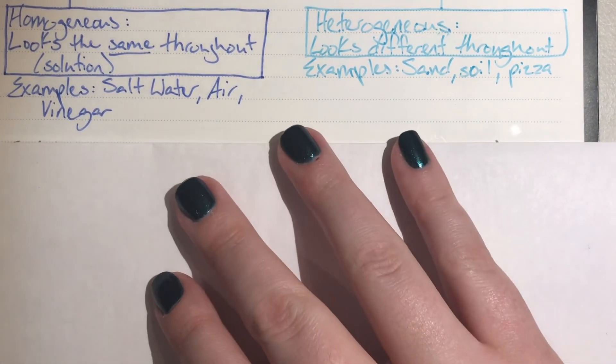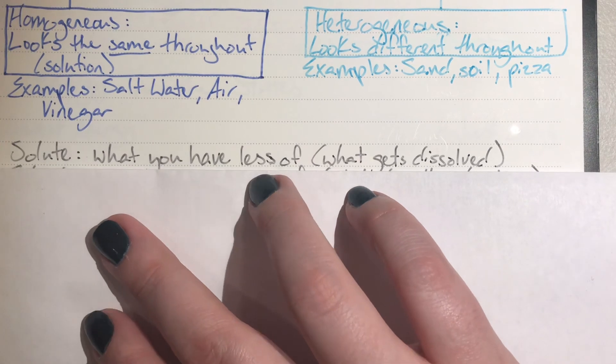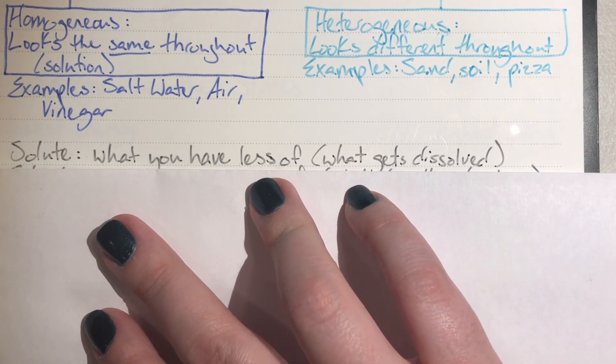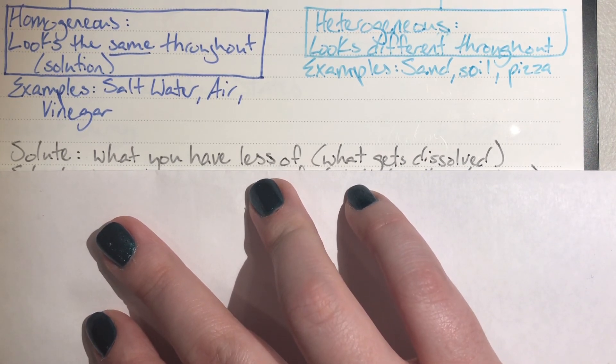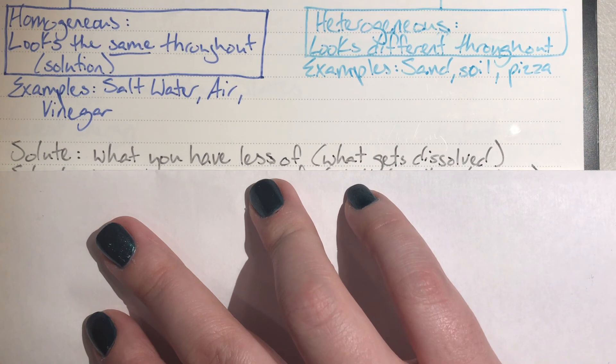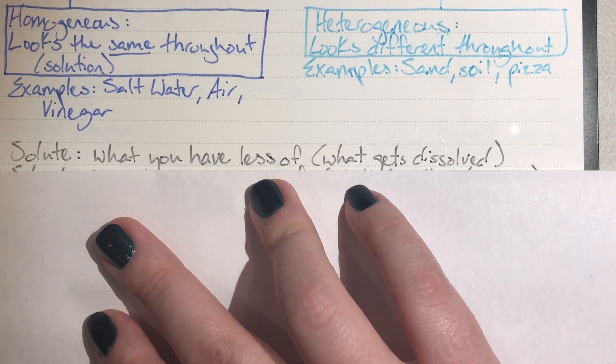We're going to go into just a little bit more detail about solutions. Some words that are important for when we make solutions—the first word is solute. The word solute is in reference to a solution, whatever you have less of. This is typically but not always the thing that is solid and will normally but not always be measured in a mass quantity like grams. It is whatever is going to be getting dissolved. In the example of salt water, the salt is the solute because it was the solid and it was what I had less of.